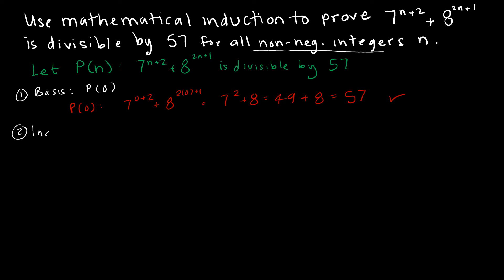Then I have to do my inductive step, and this is where things are going to get crazy. Previously in all of the other examples we've done, we had some sort of an equation we could manipulate, and that is not what we have here. So you're going to be maybe a little surprised at how we use the inductive hypothesis this time. The inductive hypothesis is that 7 to the k plus 2 plus 8 to the 2k plus 1 is divisible by 57.